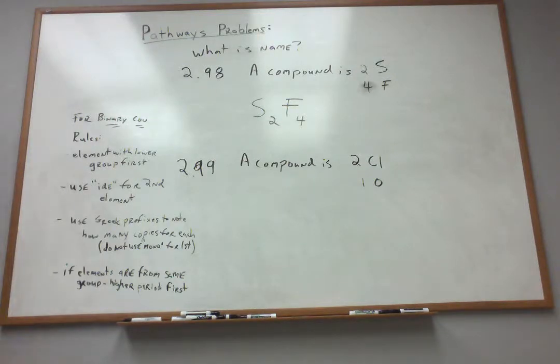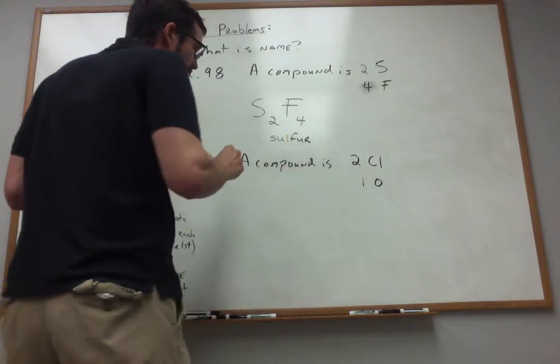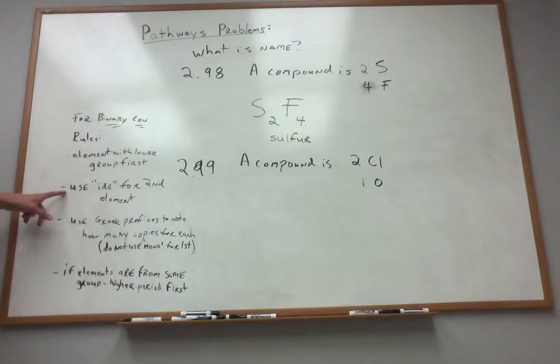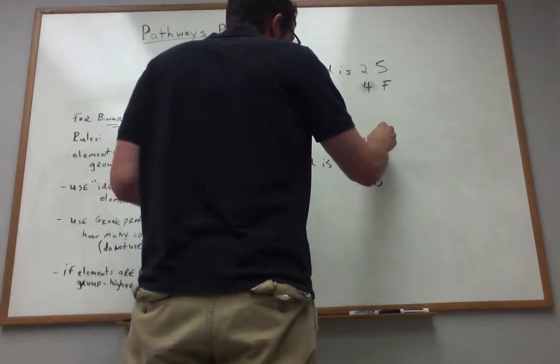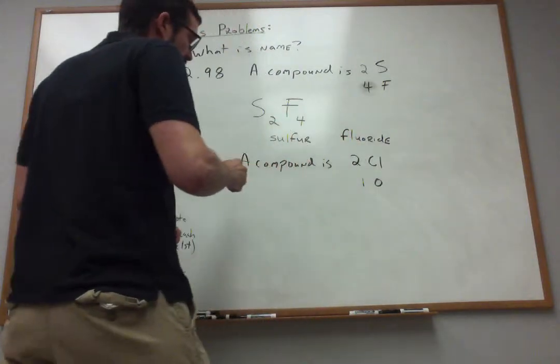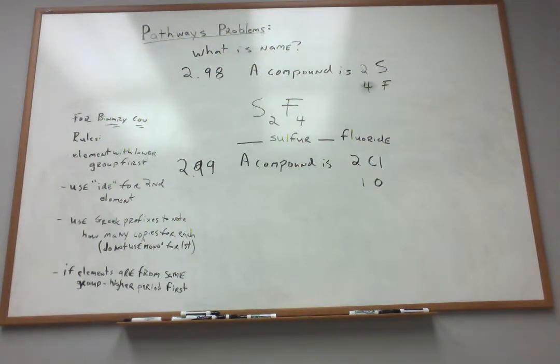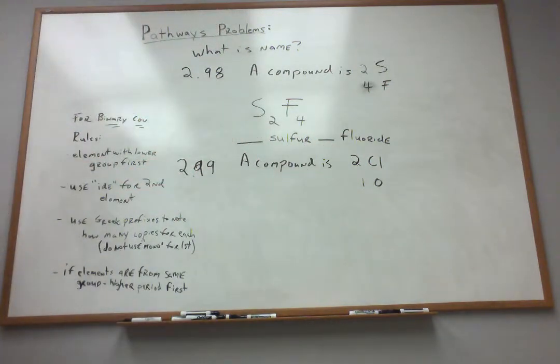But that's not the trick here. Because what we want to do is come up with a name. Now we know the sulfur should come first. We know the fluorine component of the name should come second. We also know that in our rules, we're supposed to change to the IDE ending for the second material. If I just say sulfur fluoride, I'm making some progress. Maybe I know what elements are involved, but I have not specified how many copies of each.